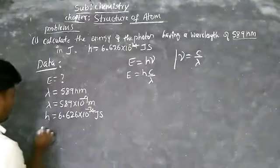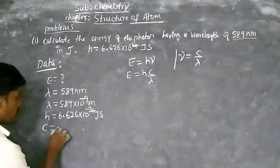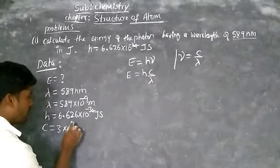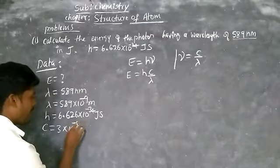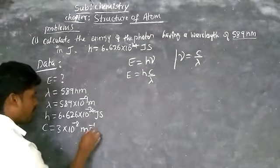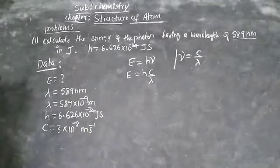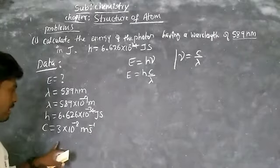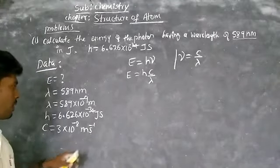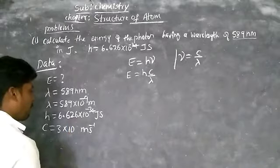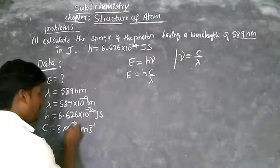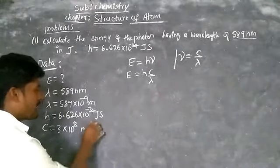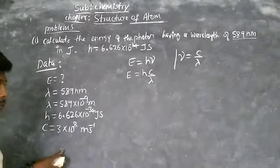You know the value of C: C equals 3 × 10⁸ meters per second. It is approximately 2.99-something, which equals 3 × 10⁸ meters per second. This is the value of C — the speed of light in vacuum.